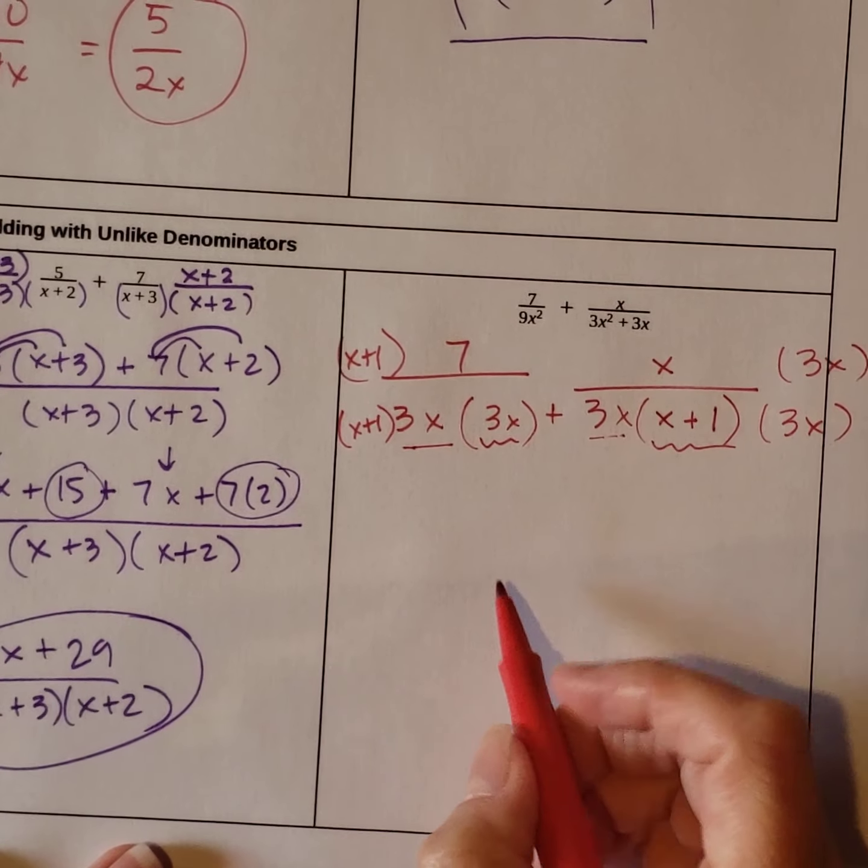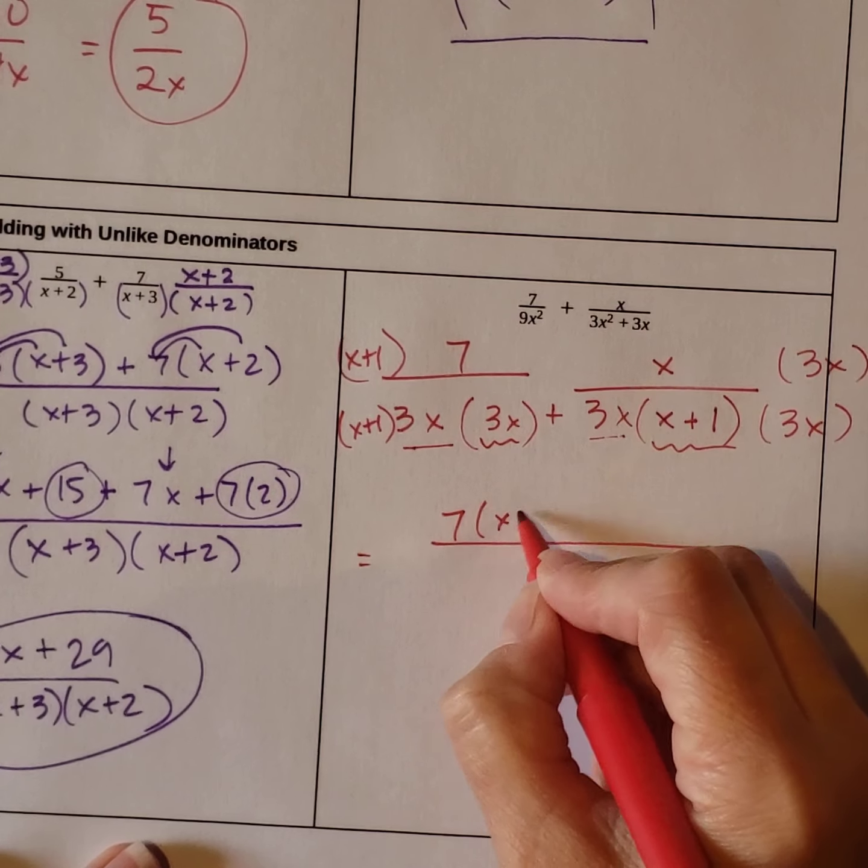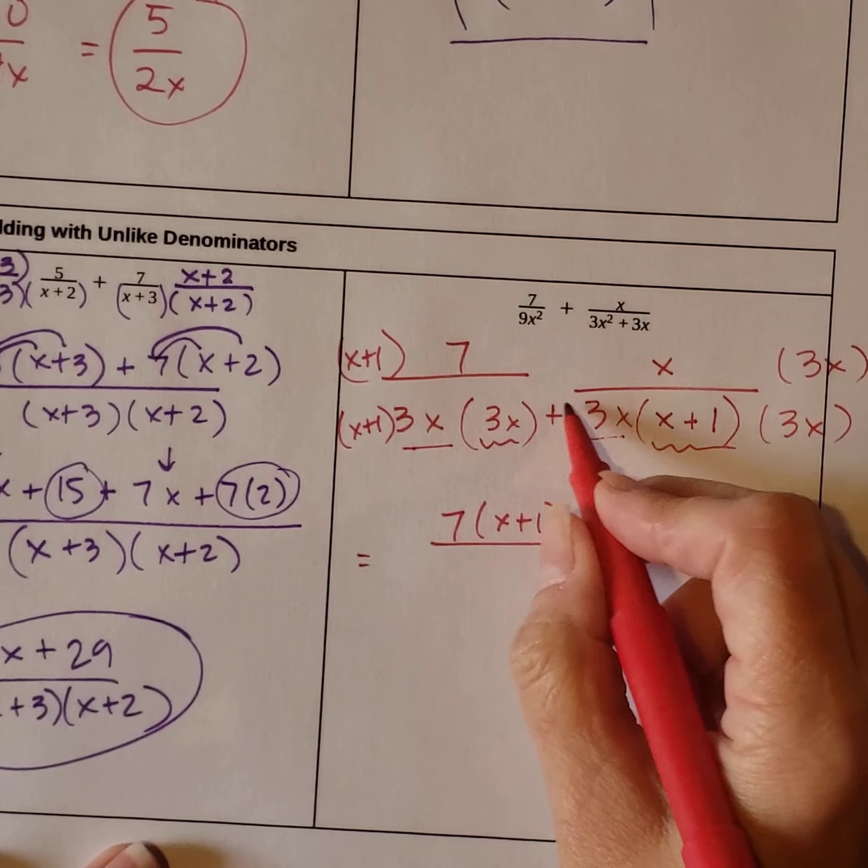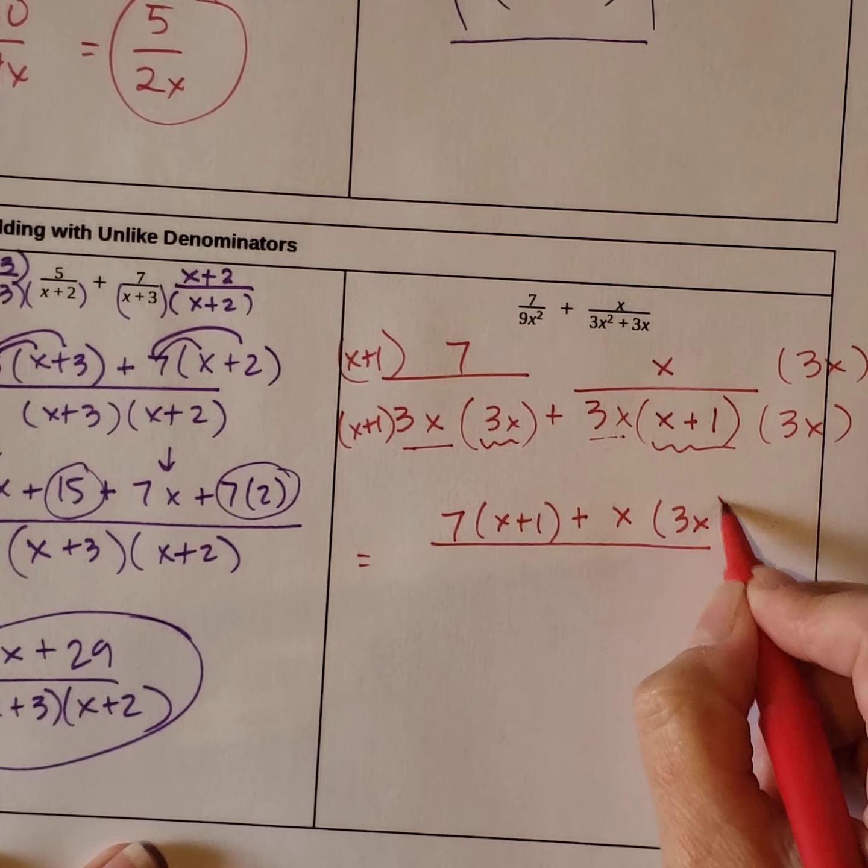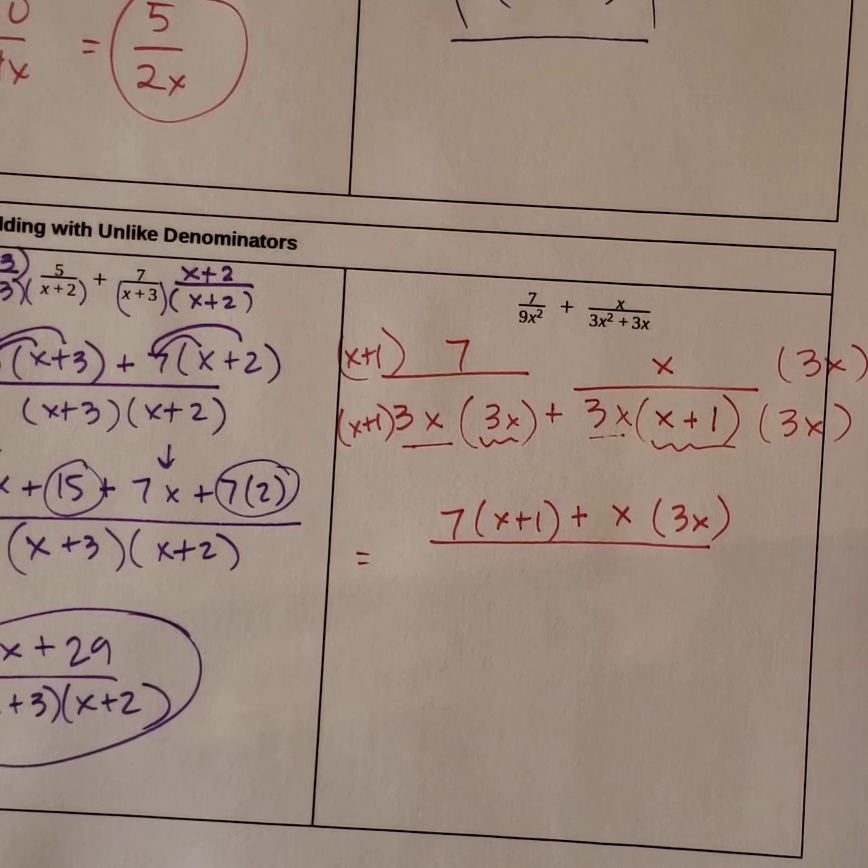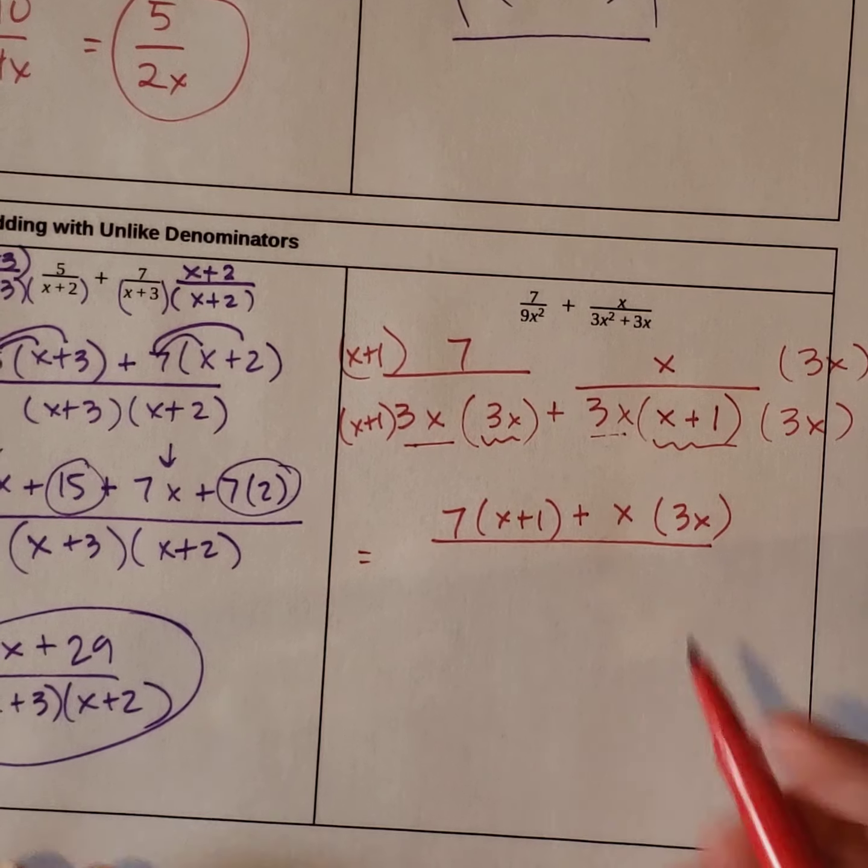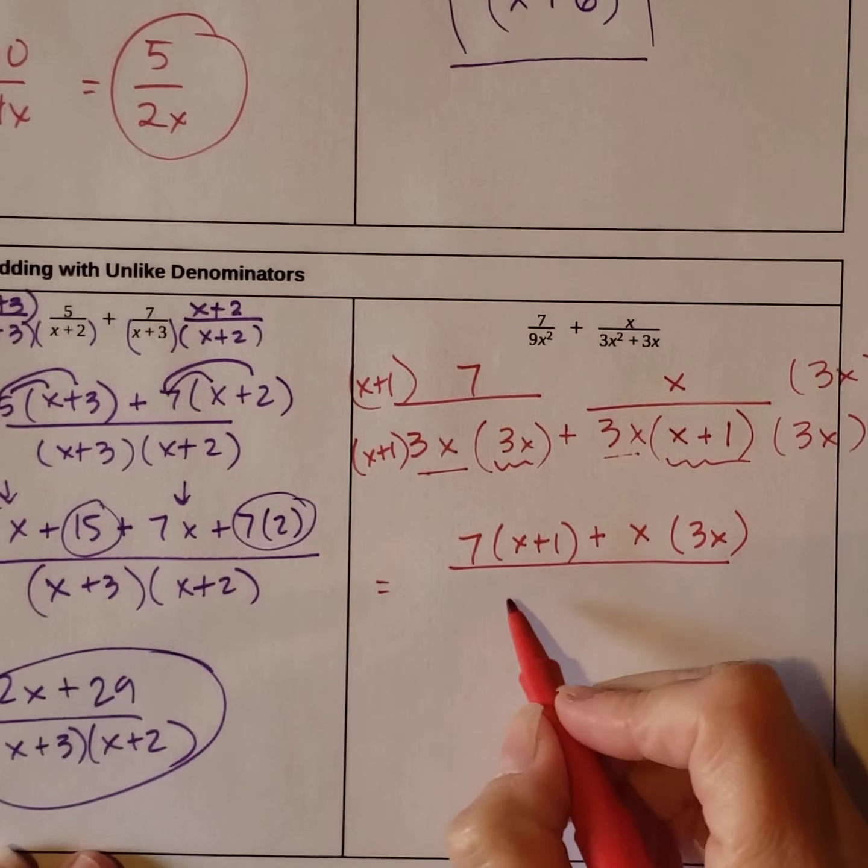So now let's put it all together. We have 7 times x plus 1 plus x times 3x. You can leave your factors all split up if you want to, or you can crunch it back together. Whatever you want.